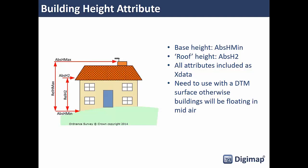All the attributes are included as X data, so if you're familiar with the CAD data model they go as X data. You do need to use these with a digital terrain model or surface, otherwise the buildings will be floating in mid-air. When we created this data in DWG format we use the absolute H min — the base of the building — as the base of the feature. So you need to combine it with a surface, and we recommend using one of the terrain surfaces from the Ordnance Survey collection.